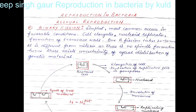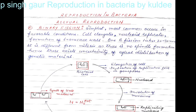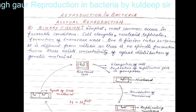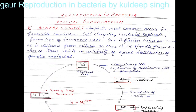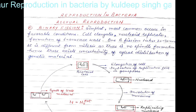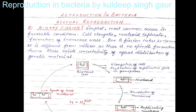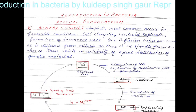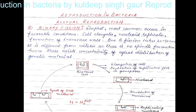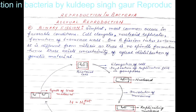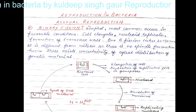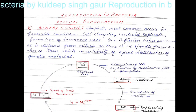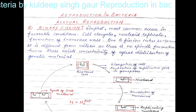Dear students, today we are going to study the reproduction in bacteria. Bacteria have two kinds of reproduction: one is asexual and another is sexual. But the truest form of reproduction in bacteria is the asexual kind, whereas the so-called sexual reproduction is not the true method of reproduction. Today we are going to take up asexual reproduction in bacteria.